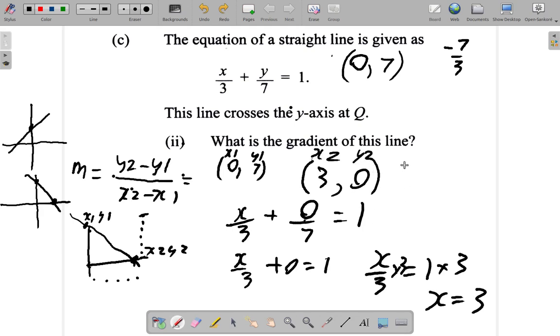Now the gradient is y2, which is 0, minus y1, which is 7, over x2, which is 3, minus x1, which is 0. So what does this come down to? 0 minus 7 is negative 7 over 3 minus 0 is 3. So we have negative 7 over 3 again, using two different methods.